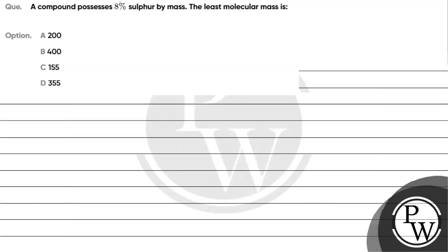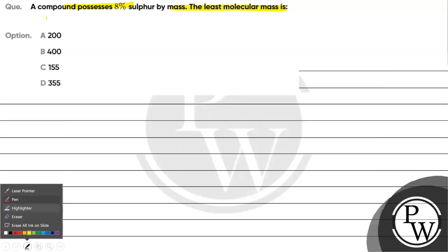Hello, let's read this question. The question says a compound possesses 8% sulfur by mass. The least molecular mass is: option A, 200; option B, 400; option C, 155; option D, 355.